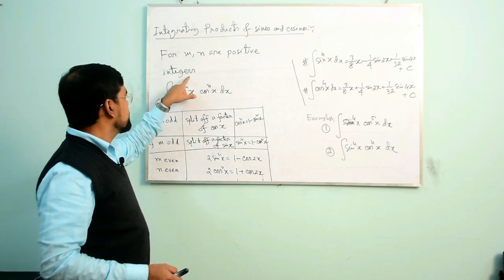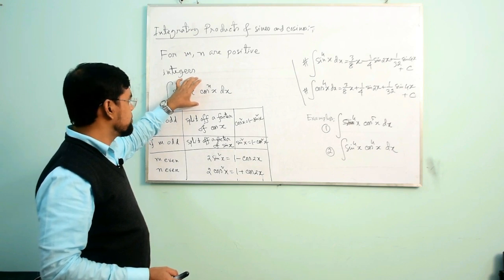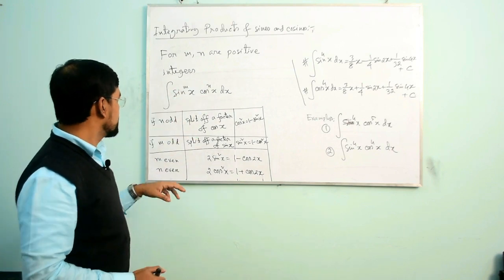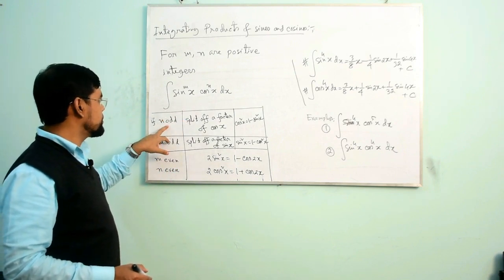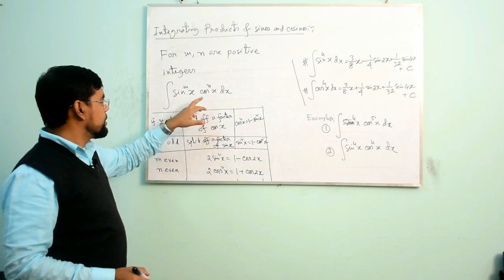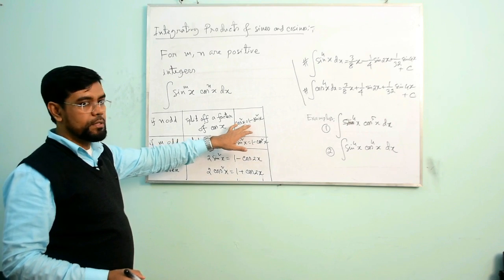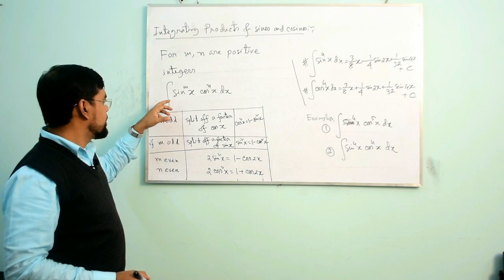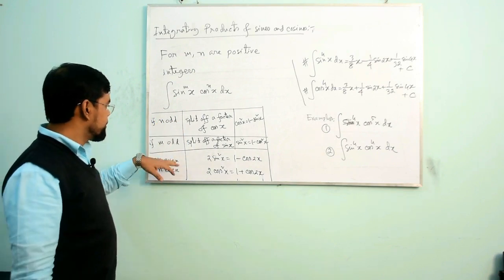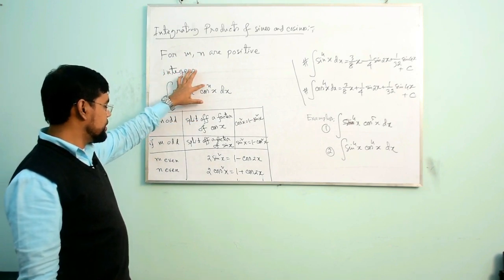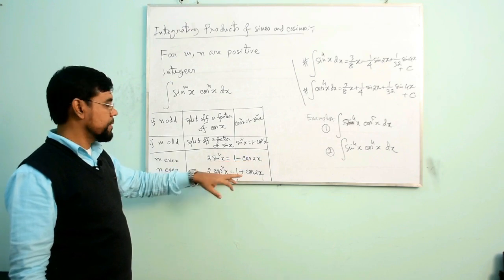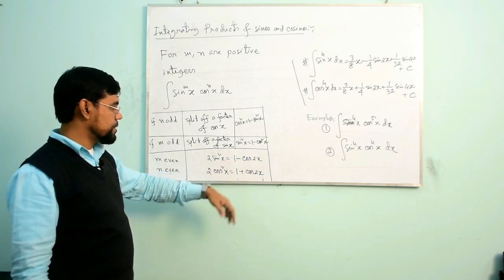For m and n as positive integers, if we consider this integral, how we integrate it depends on the power of sin x and the power of cos x. This table shows that if n is odd, meaning cos to the power is odd, you need to split off a factor of cos x, then use the identity cos²x = 1 − sin²x. If m is odd, split off a factor of sin x. If both m and n are even, just use the identities: 2sin²x = 1 − cos 2x and 2cos²x = 1 + cos 2x.